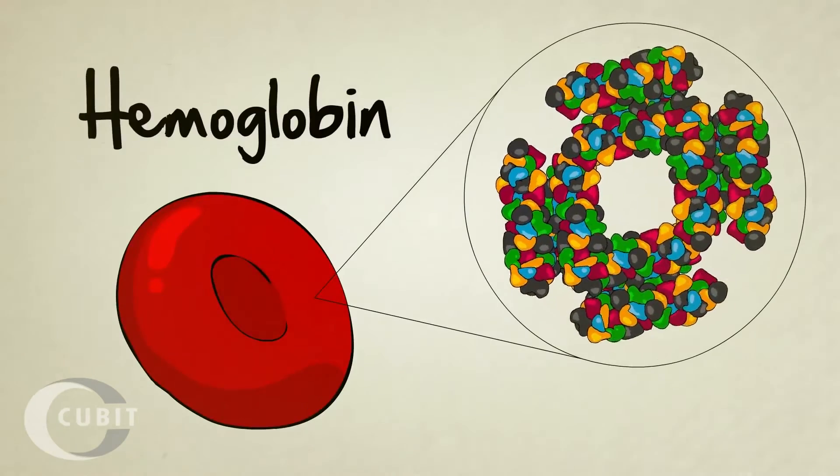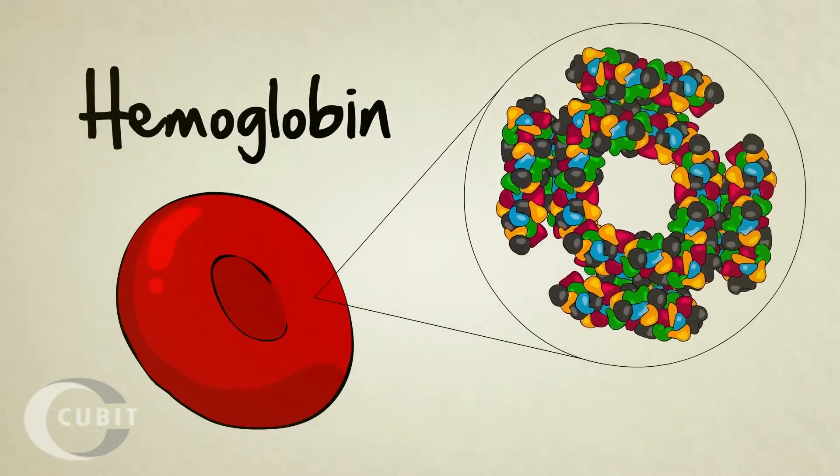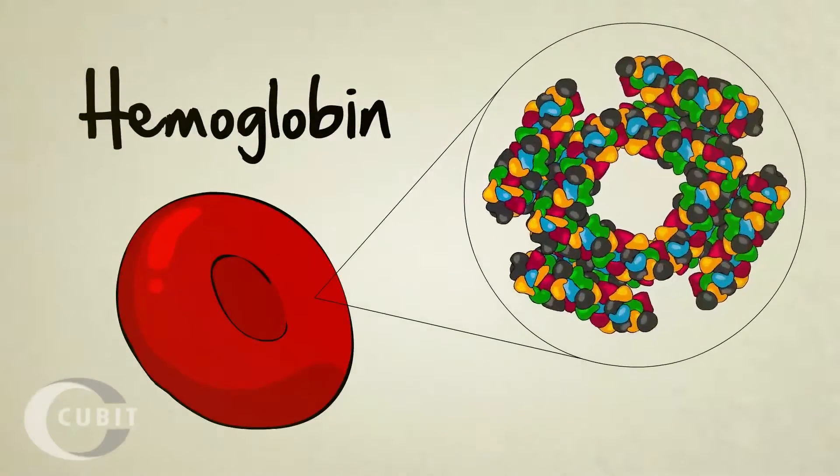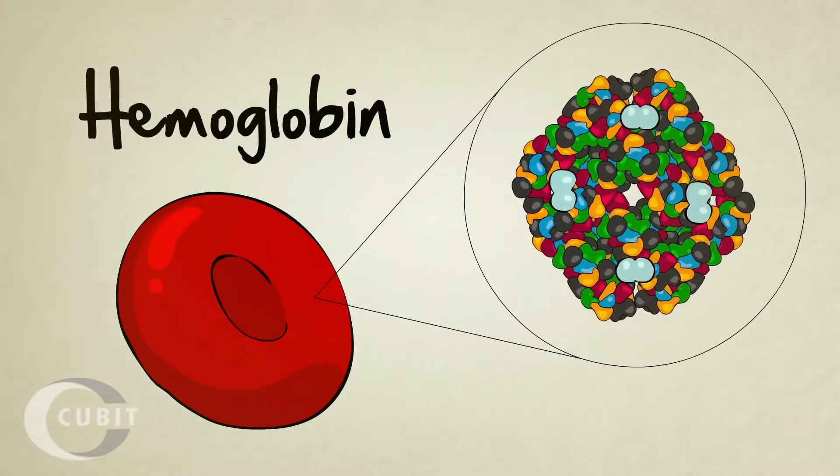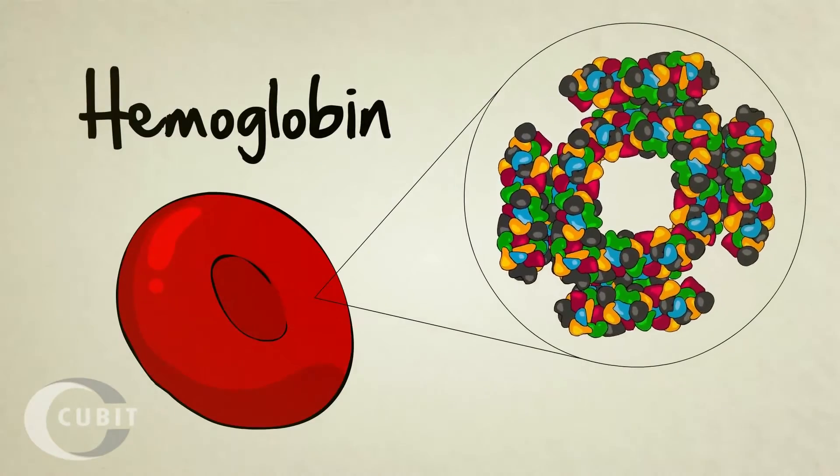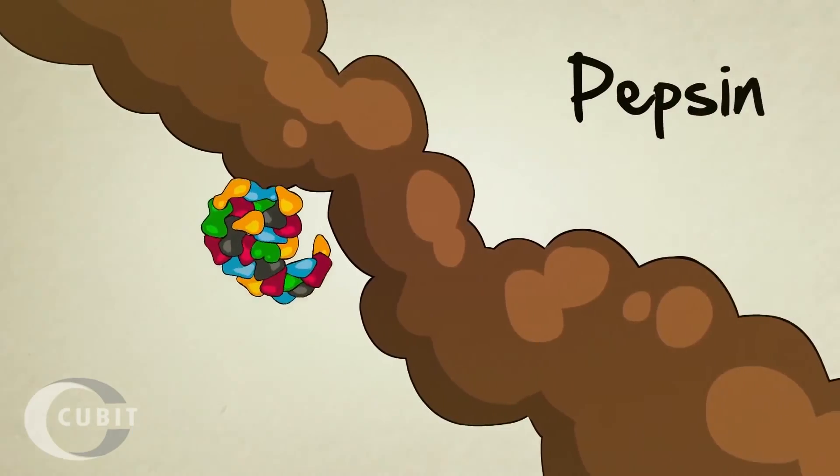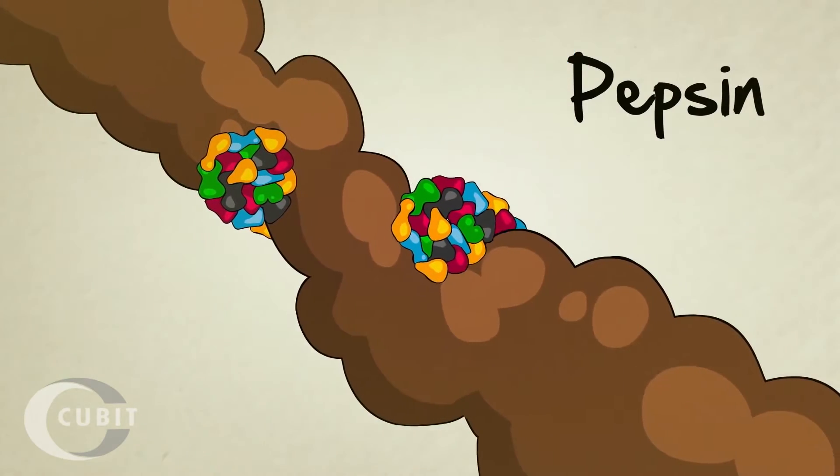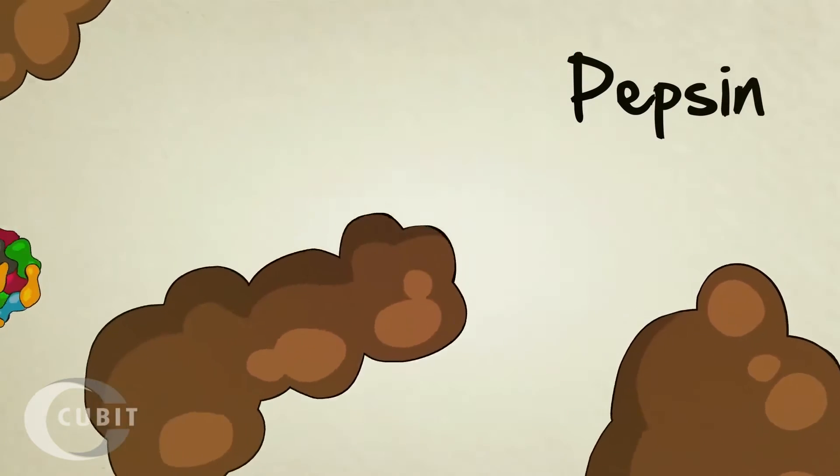Hemoglobin, for example, is a protein structure found in red blood cells. Its unique shape and size allow it to capture oxygen molecules when blood flows near the lungs, and then release them later when blood flows near oxygen-starved tissues. Pepsin is a digestive protein. Its unique shape allows it to break down food inside your stomach so it can be absorbed by the body.